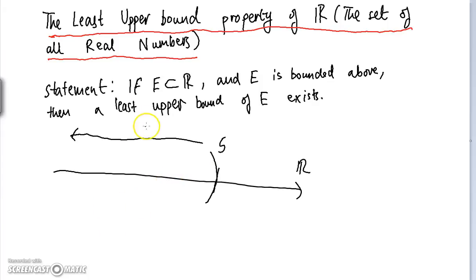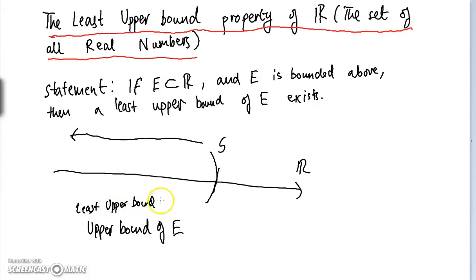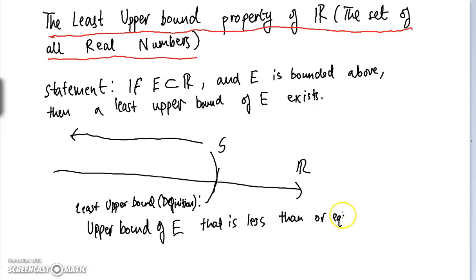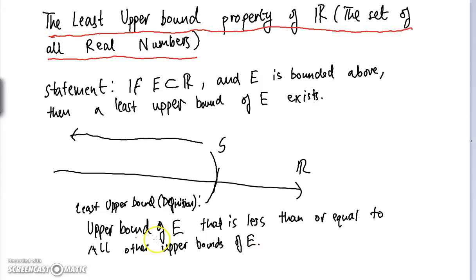What does a least upper bound mean? A least upper bound is an upper bound of E that is less than or equal to all other upper bounds of E. In other words, it's simply the smallest upper bound.